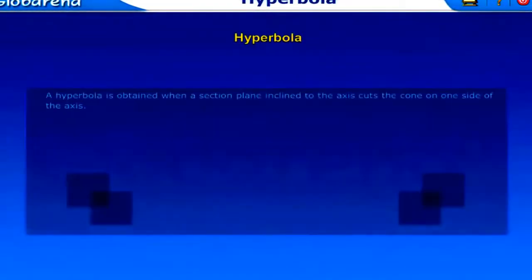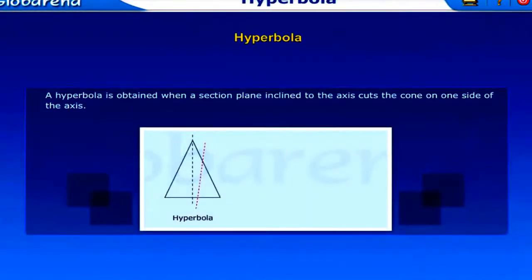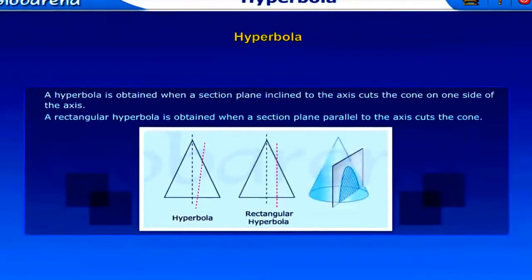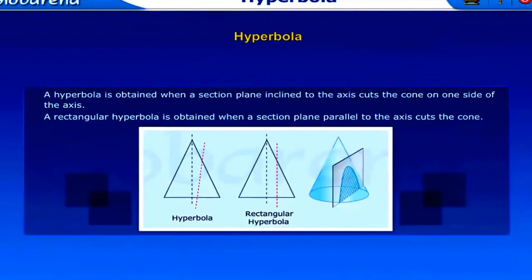Hyperbola: A hyperbola is obtained when a section plane inclined to the axis cuts the cone on one side of the axis. A rectangular hyperbola is obtained when a section plane parallel to the axis cuts the cone.